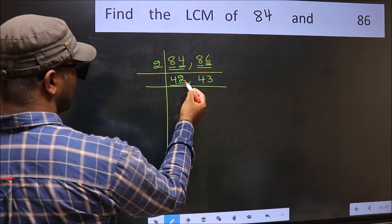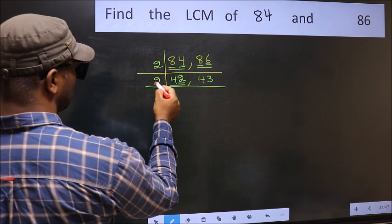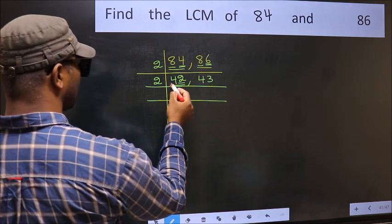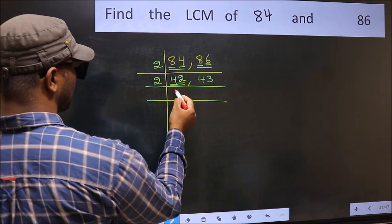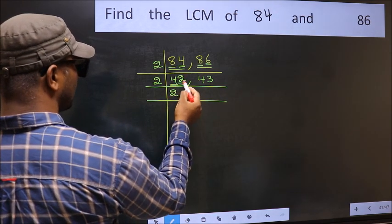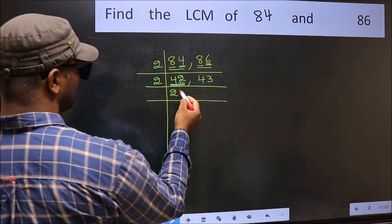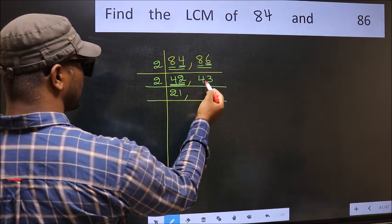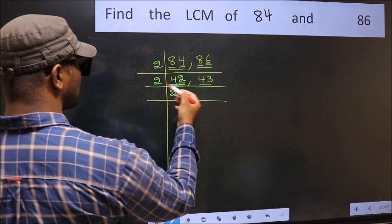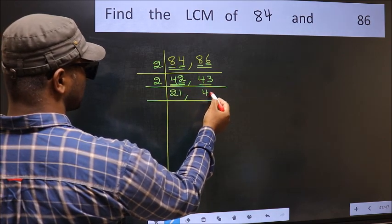Now here we have 42. Last digit 2 is even, so take 2. First number 4. When do we get 4 in 2 table? 2 times 2 is 4. The other number 2. When do we get 2 in 2 table? 2 times 1 is 2. The other number 43, not divisible by 2, so you write it down as it is.